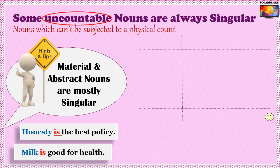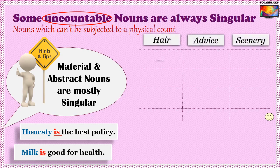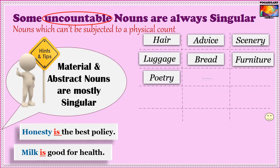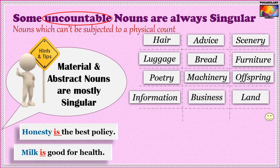Here is a list of some other common uncountable nouns in English: advice, scenery, luggage, bread, furniture, poetry, machinery, offspring, information, business, land, etc. — all uncountable and singular. You can't append an ES to them to make a plural. Words like 'advices,' 'sceneries,' 'luggages,' 'breads' — do remember that they are all wrong and do not exist at all.